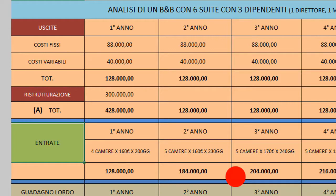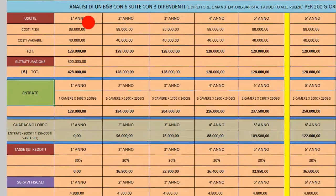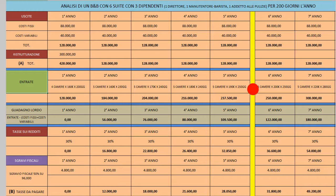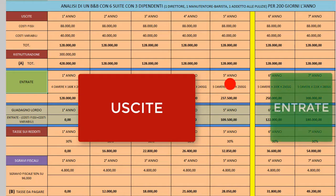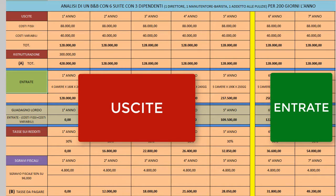Ho suddiviso questa tabella per anni, fino al settimo, ma potevo continuare. Mi interessava individuare quella linea gialla che separa la parte dove avrò soltanto uscite dalla parte dove inizierò ad avere entrate. Lo vediamo tra un poco; vado molto veloce perché voglio sintetizzare.